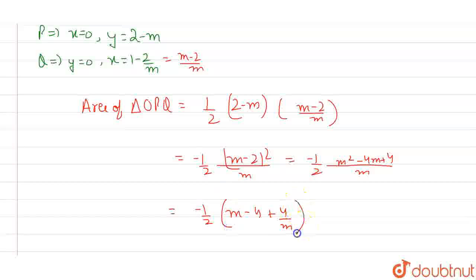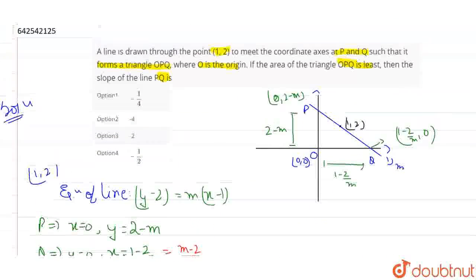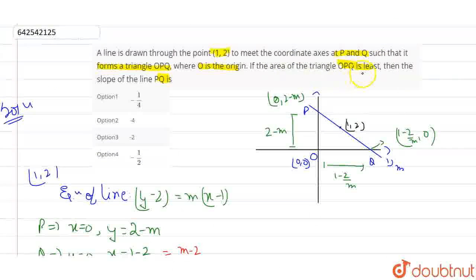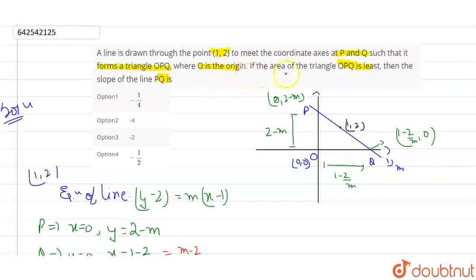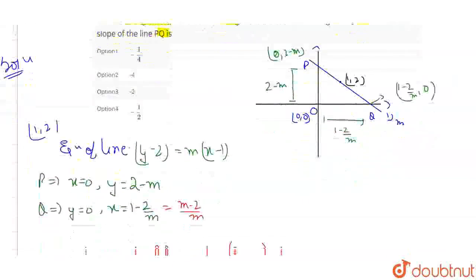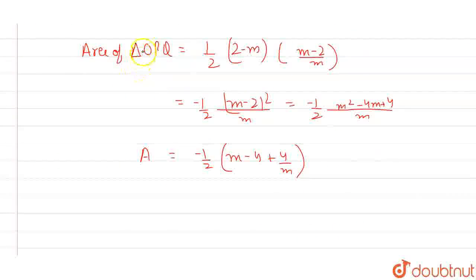This is the equation we are having. So now, it is given to us in the question that if the area of triangle OPQ is least, then the slope of the line PQ. If the area of triangle is least, it means that dA/dm should be equals to 0. This is the condition for least. So dA/dm should be equals to 0.